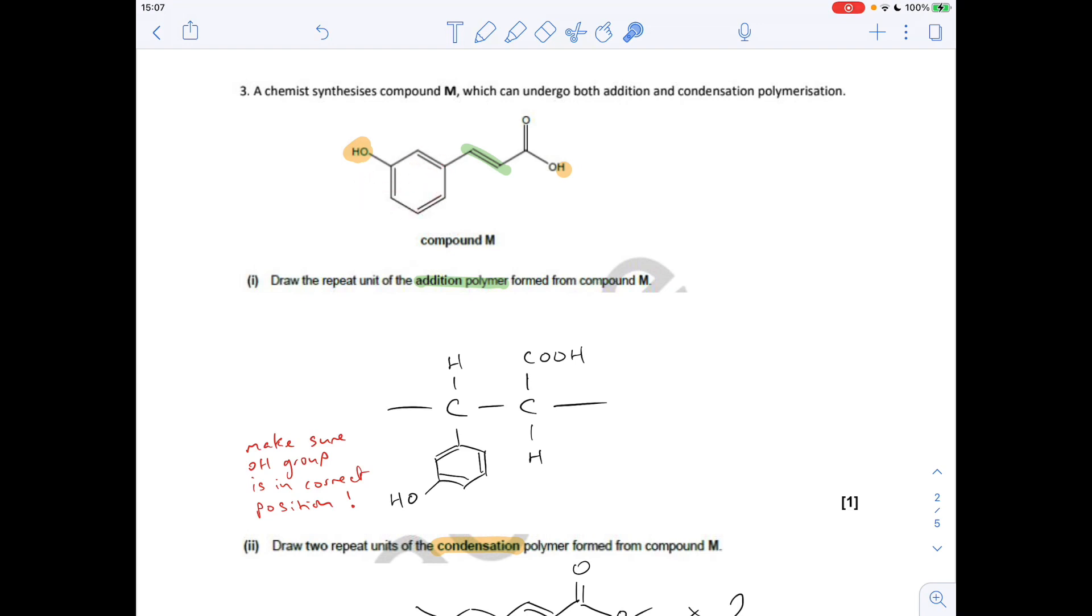So all I've done is broken the double bond, put the end bonds on, and then everything else back in place. Now the only thing to be careful of here is the position of your OH group on your benzene ring. So you can see it's one, two carbons away from that one. So we need to make sure that it's the right number of carbons away in your repeat unit.